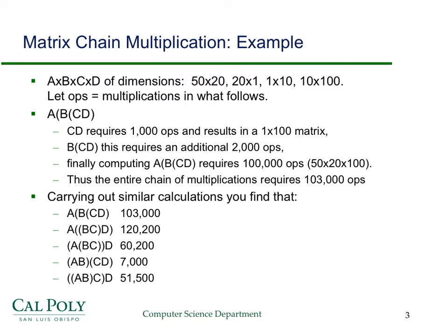Carrying this example a step further, we'll take this specific example and compute the number of multiplications for a couple of the possibilities. Here's one: multiply C times D first, then B, and then finally by A. So C times D — that's this matrix times this matrix — that's going to require 1,000 operations: 1 times 10 times 100. It ends up being a 1 by 100 matrix.